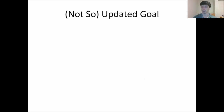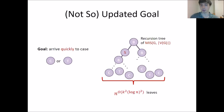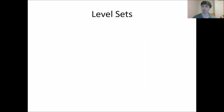Our updated goal remains the same: we want to quickly reach either a C node (recursing on connected components) or a T node (terminal, 0 or 1 vertices). For any subtree of the recursion tree where all internal vertices are either B nodes (branching) or S nodes (adding a balanced separator), we want the number of leaves to be at most N to the O(K² log² N).